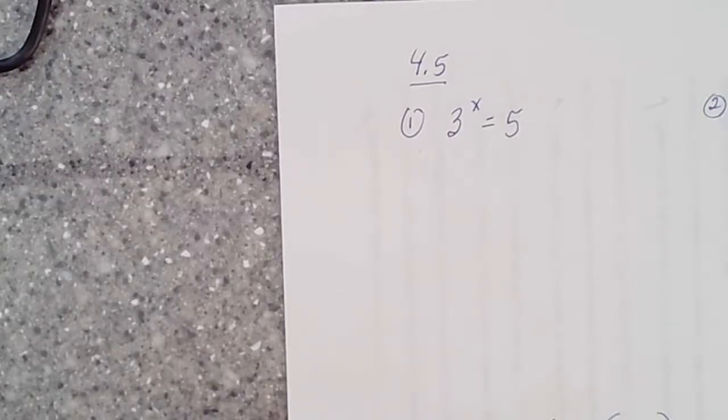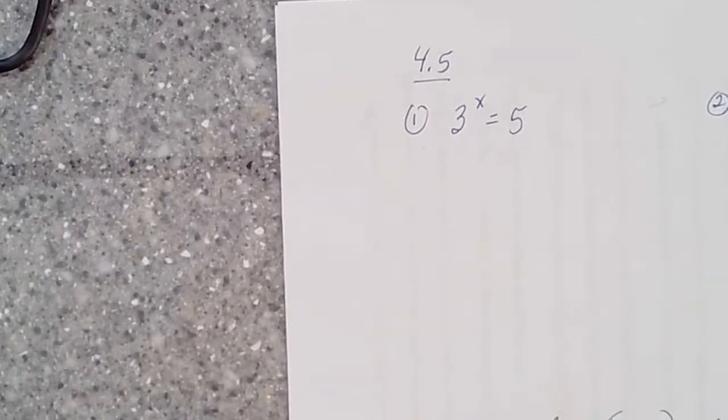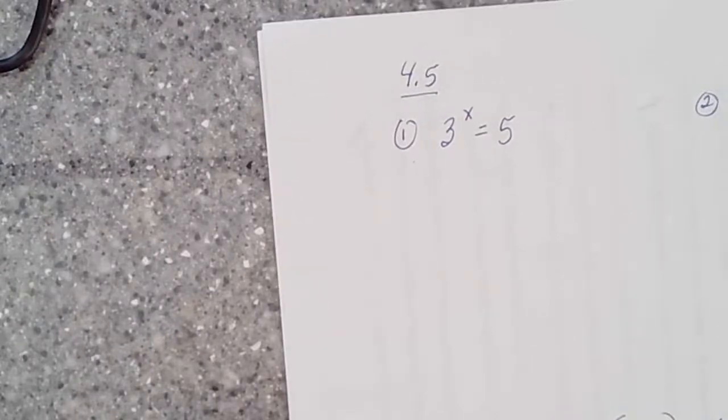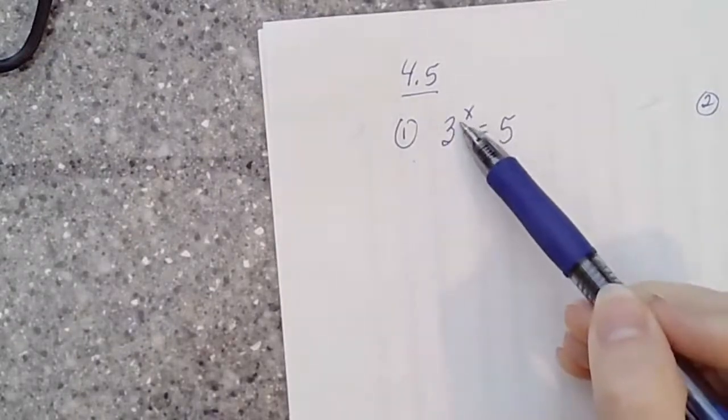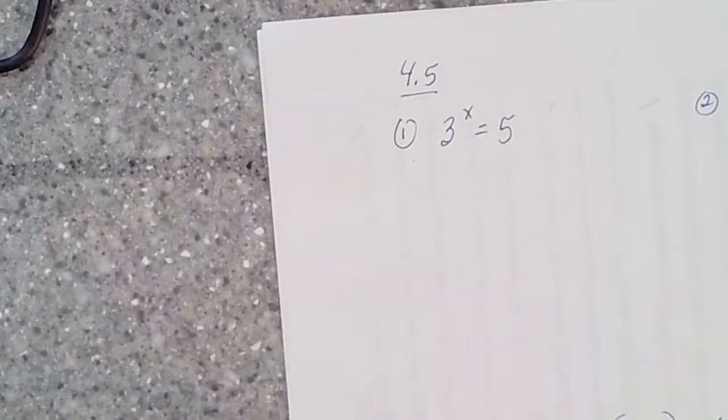So we're going to see that here and you might kind of estimate what do you think this would be? Three to the first would be three, so that's too small and three to the second would be nine and that's too big. So we know it's somewhere between x being one or two, somewhere between one and two. But how do you find that exactly? Nothing we've done up to this point would allow us to do that. None of our old algebra skills. So this is something new and logarithms help us solve this type of equation.